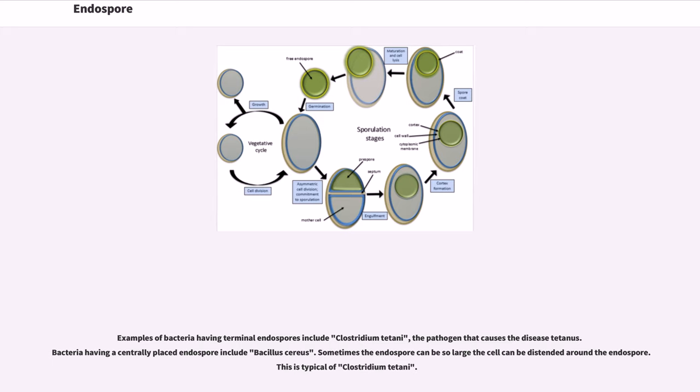Examples of bacteria having terminal endospores include Clostridium tetani, the pathogen that causes the disease tetanus. Bacteria having a centrally placed endospore include Bacillus cereus. Sometimes the endospore can be so large the cell can be distended around the endospore. This is typical of Clostridium tetani.